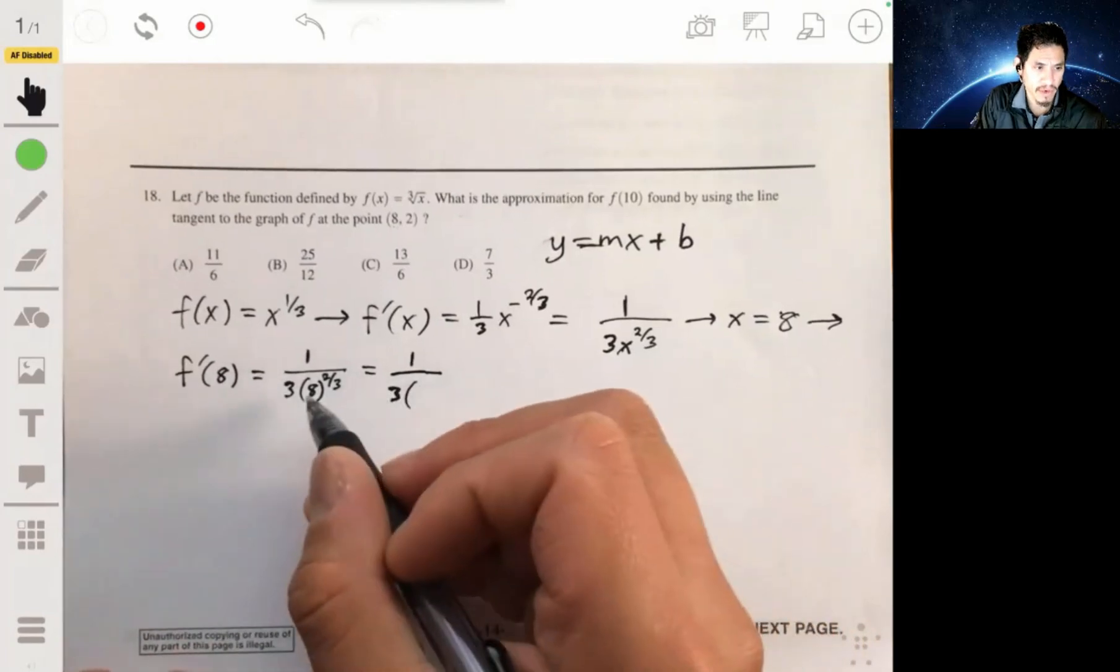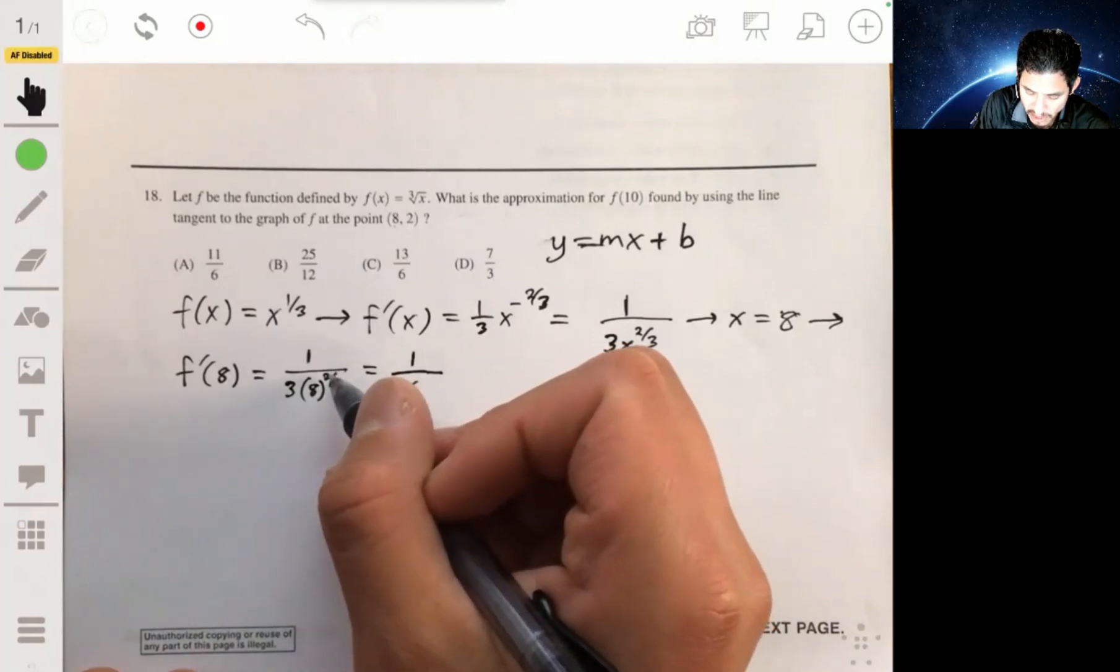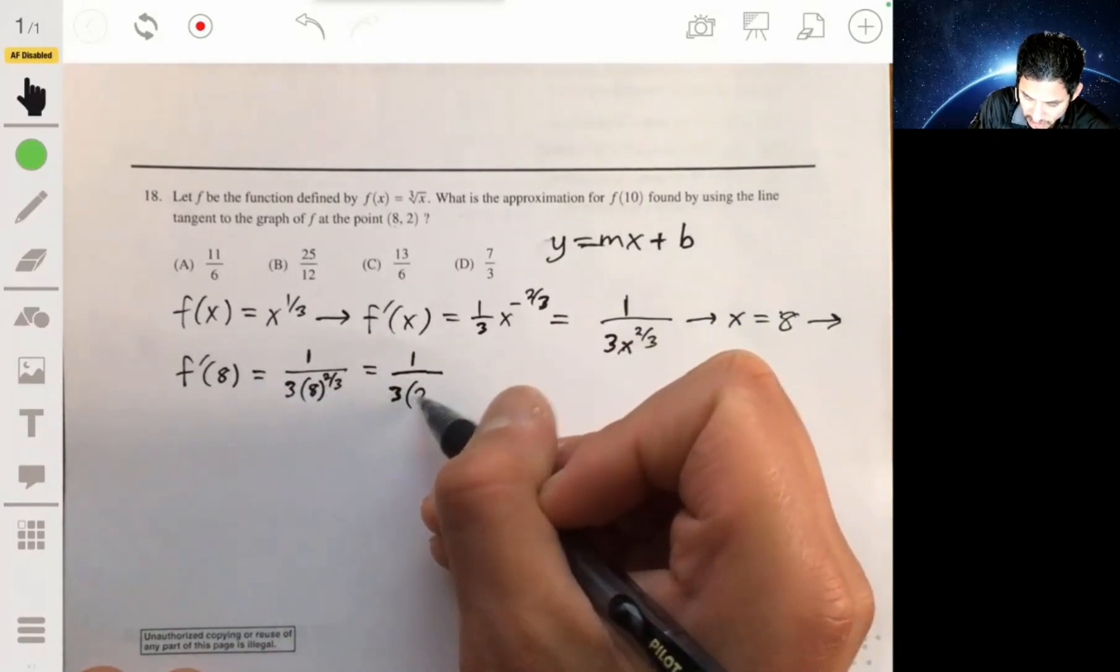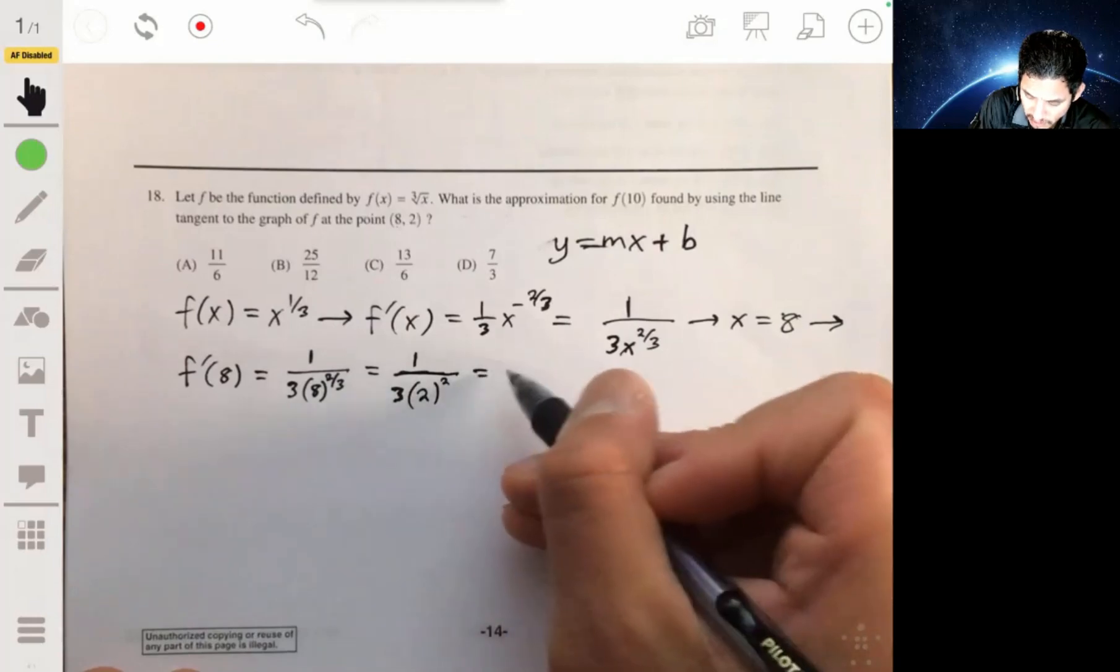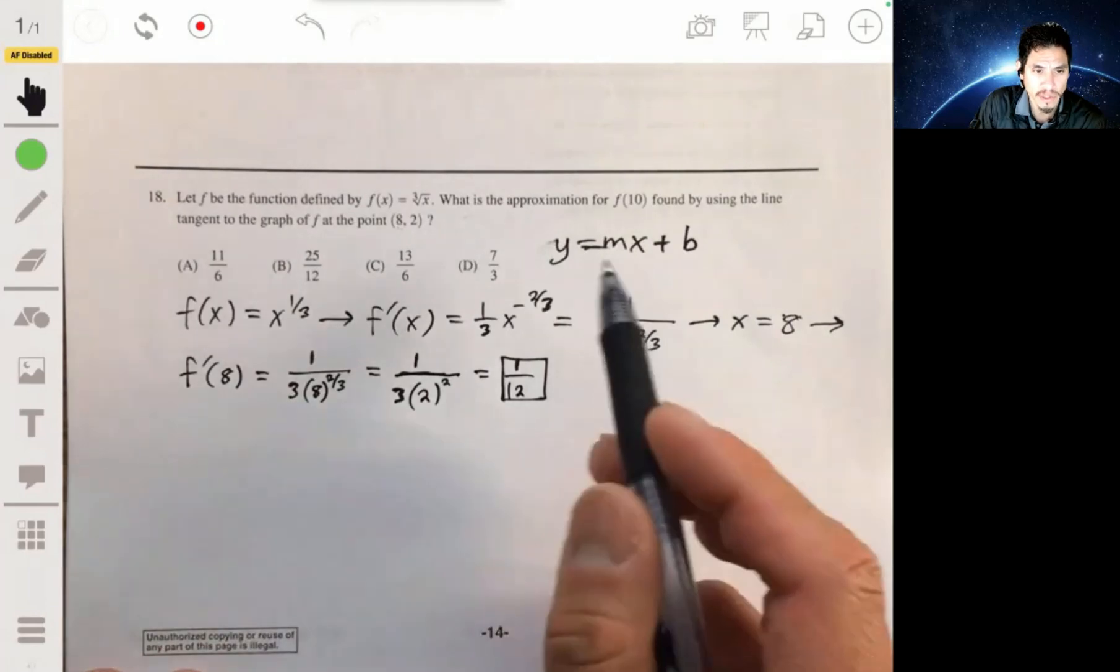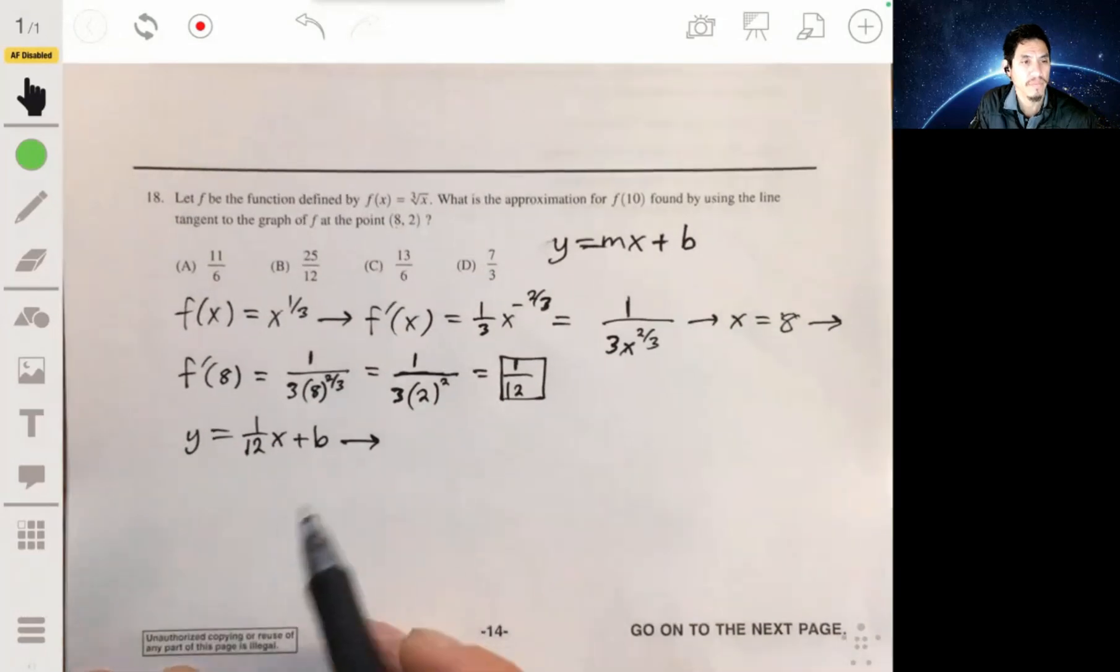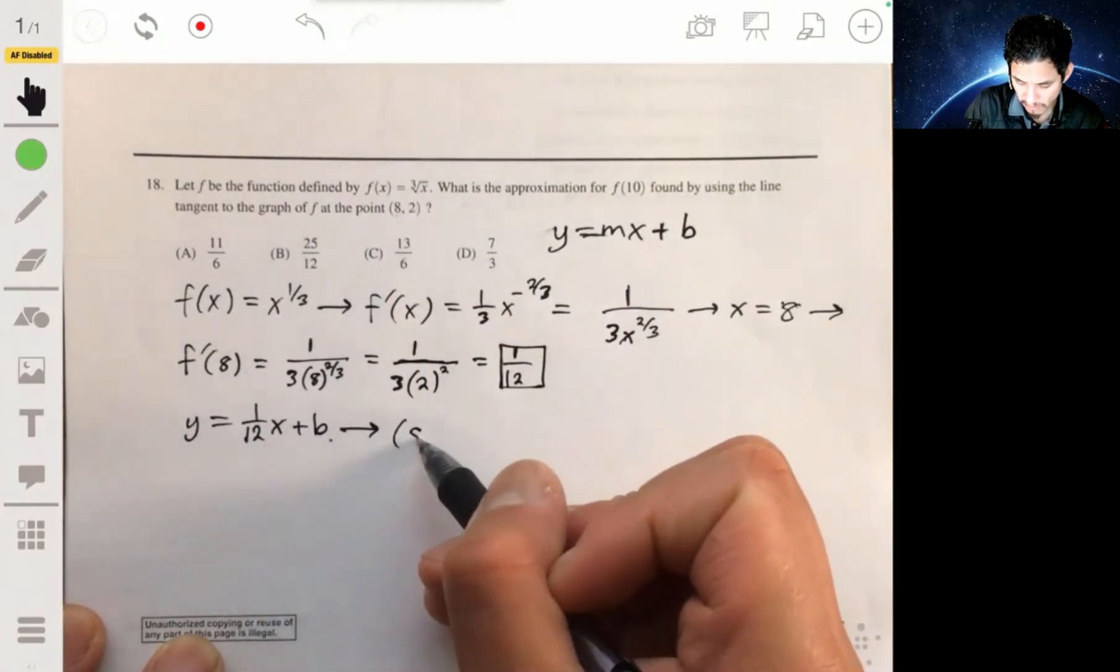Now, make sure you remember how to do this. This is just like the cube root of 8, it's like 8 to the 1/3 squared, or you can do 8 squared and the cube root of that. So the cube root of 8, 8 to the 1/3, that would be 2. Then you still have squared there. So then you have 1 over 3 times 4, so you have 1/12. So your slope is 1/12.